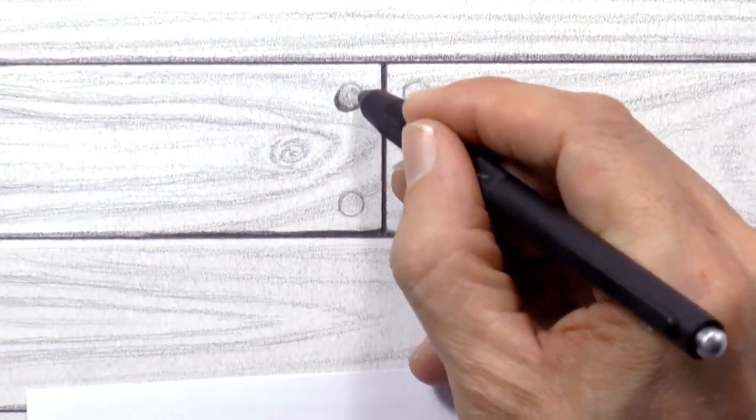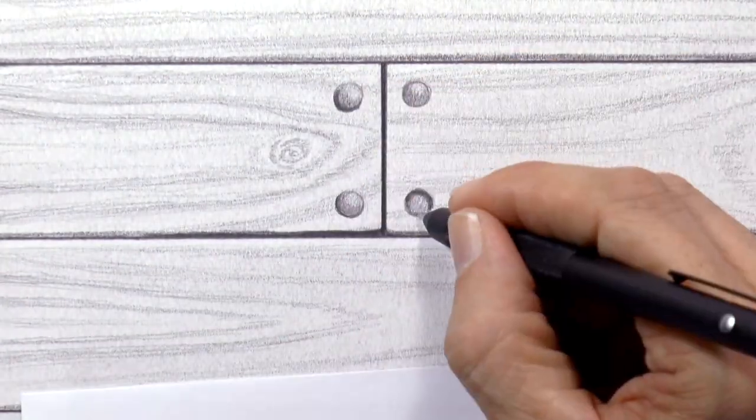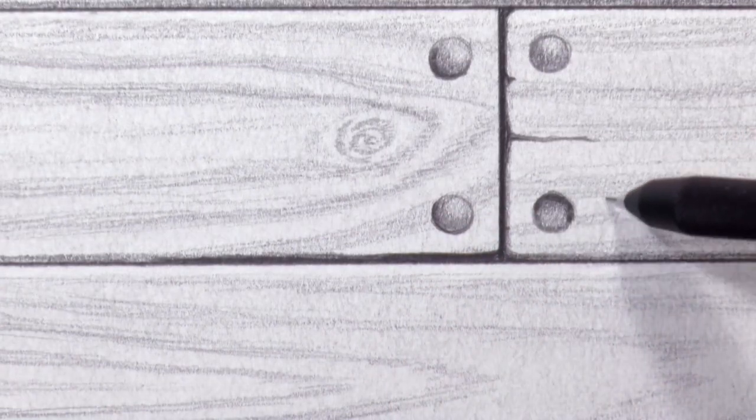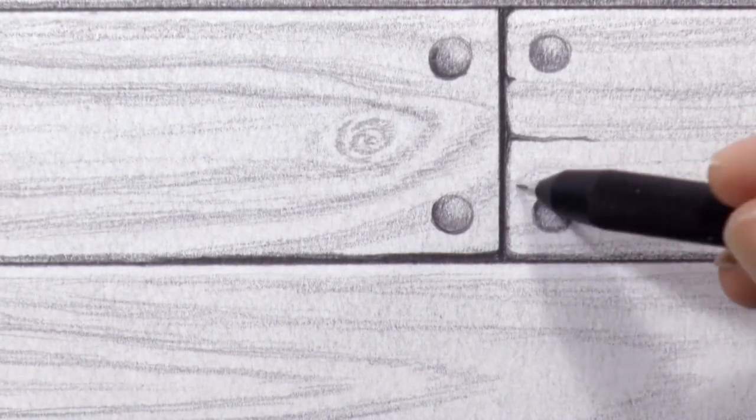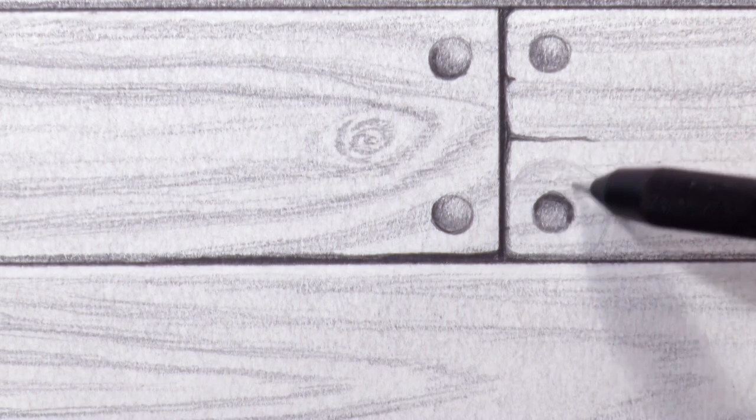Now let's draw the nails on these ends. This one will be like sunk in. And we can draw the trace of a hammer hitting the wood.